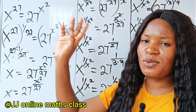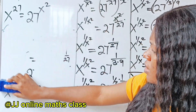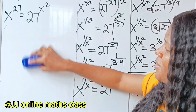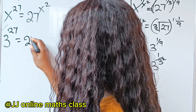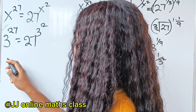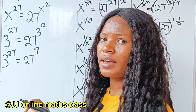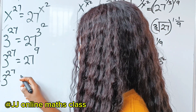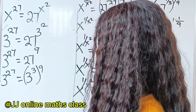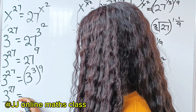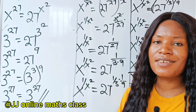Now to the most amazing part of this video, let's substitute what we got into this place to prove that what we did is correct. We got our x to be 3, so 3 to the power of 27 is equal to 27 to the power of 3 squared. So we have 3 to the power of 27 is equal to 27 to the power of 9. And 27 is equal to 3 to the power of 3, raised to the power of 9. So we have 3 to the power of 27 is equal to 3 to the power of 3 times 9, which is 27. You can see that the answer is correct.